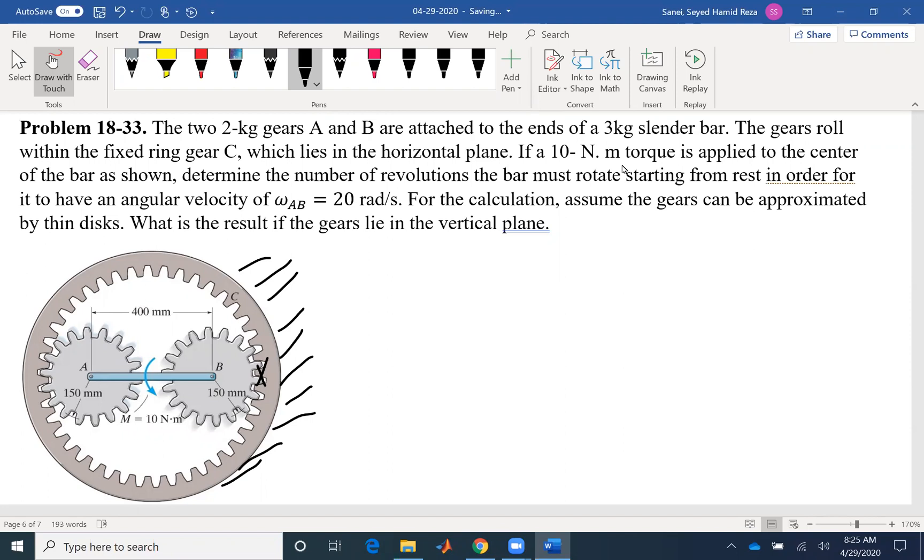If a 10 newton meter torque is applied to the center of the bar as shown, determine the number of revolutions the bar must rotate starting from rest in order for it to have an angular velocity of 20 radians per second. This is the angular velocity of the rod AB. Remember that for this problem, the angular velocity of the rod is not necessarily the same as the angular velocity of the gears. Also, the question is asking for the number of revolutions. Sometimes when the question is asking for an unknown that is not common, students get a little bit scared and they don't know what to do with the problem.